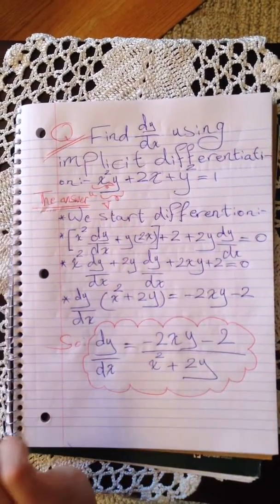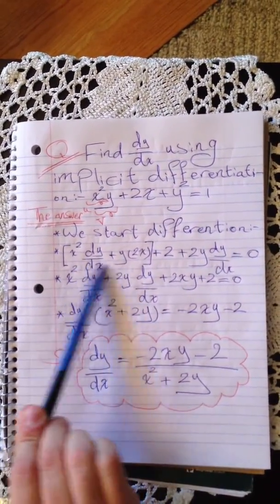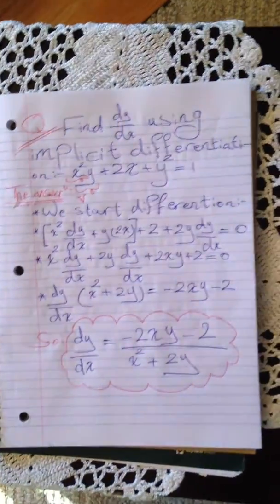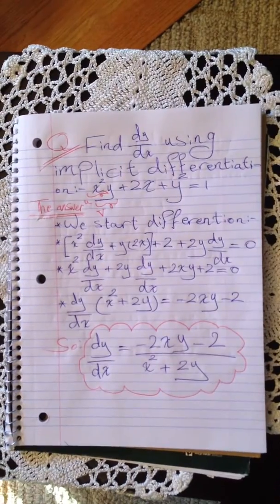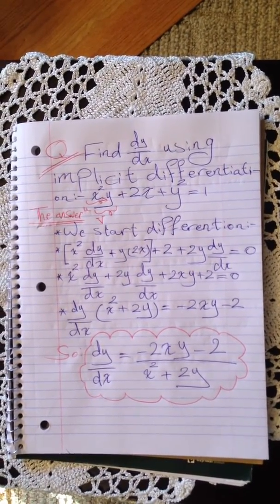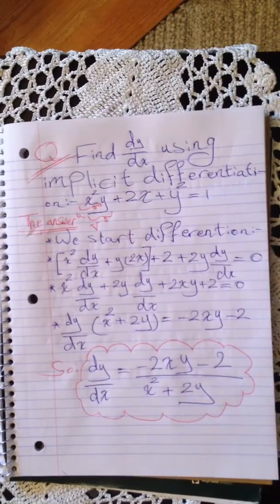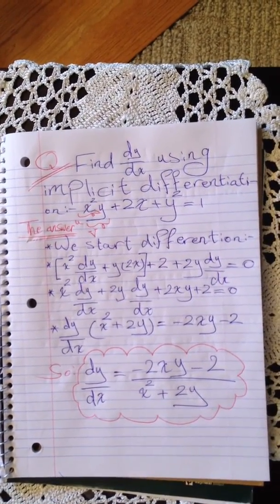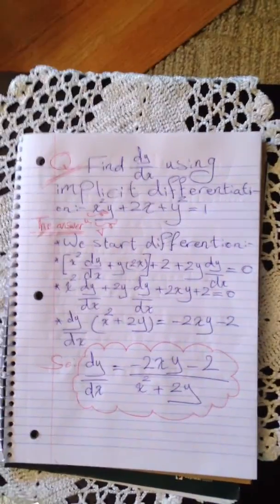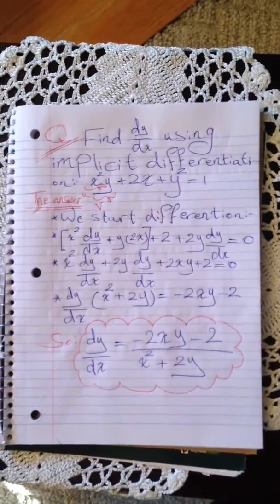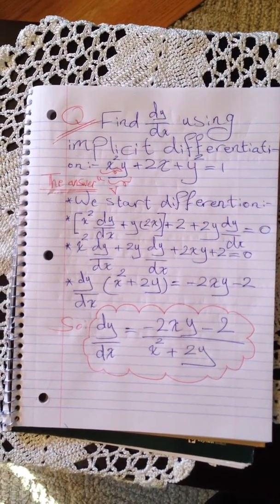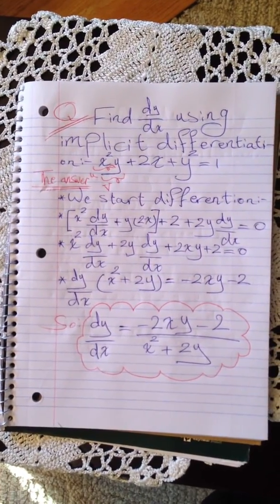When we have x multiplied by y, this is a u function and v function, so we use the product rule. I hope you got benefit from this question helping you comprehend the idea of implicit differentiation. Thank you very much, and bye.